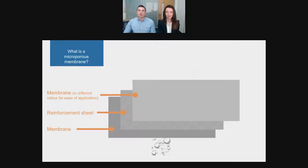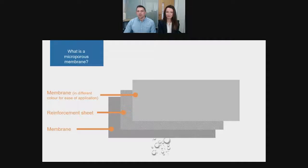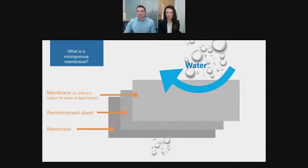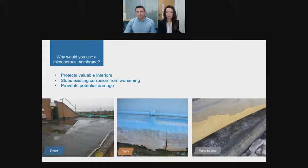To begin, we want to clarify exactly what we mean by a microporous membrane. A membrane is a selective barrier that allows the passage of certain vapors but restricts others. If the membrane was not microporous, any trapped moisture would have to find a different way out, potentially causing dampness and weakening a structure. The microporous membrane is designed to prevent water ingress but allow the roof or structure to breathe — its microporous structure allows trapped water vapor to escape through the membrane and reinforcing sheet.